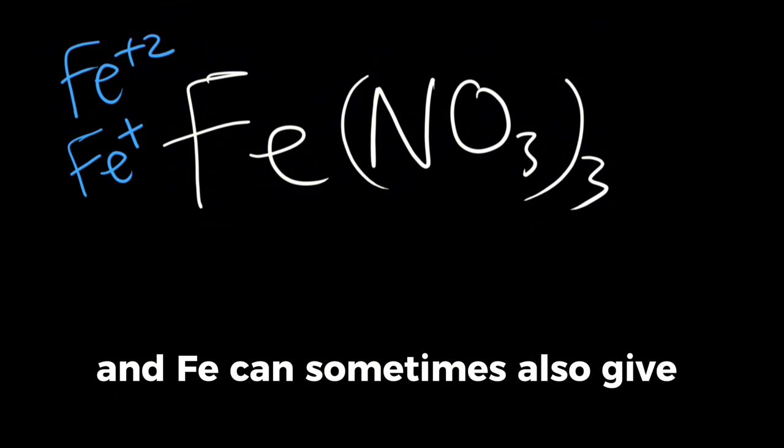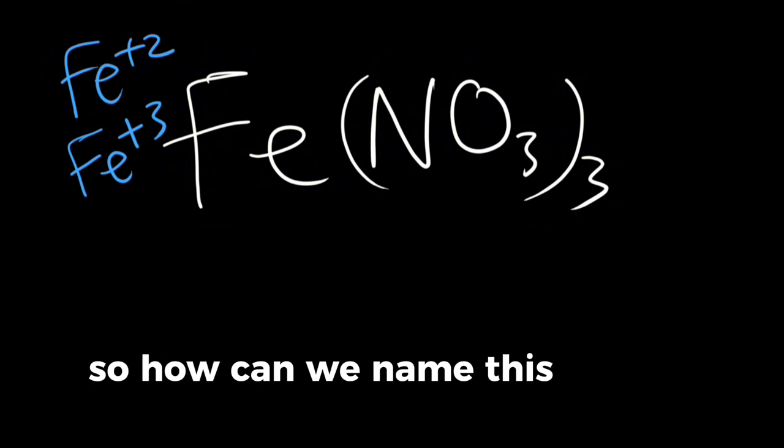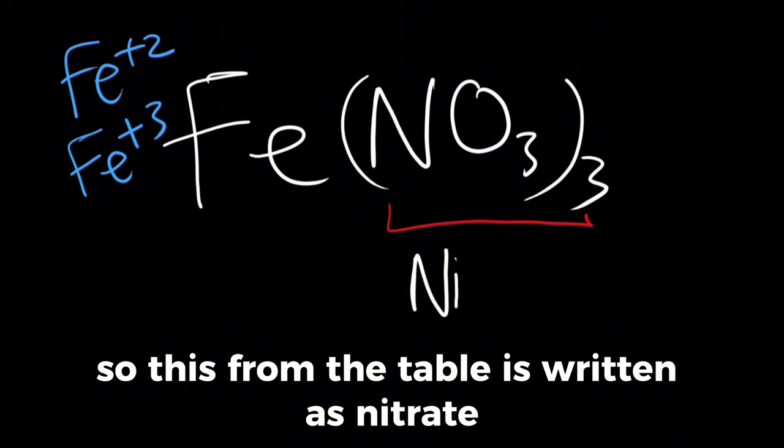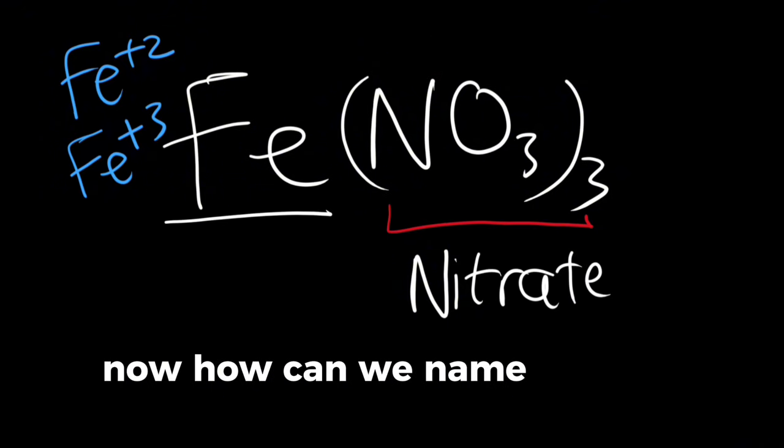First of all, we'll start off by naming the polyatomic ion as it is. From the table, this is written as nitrate. Now how can we name this? We know that this is iron.